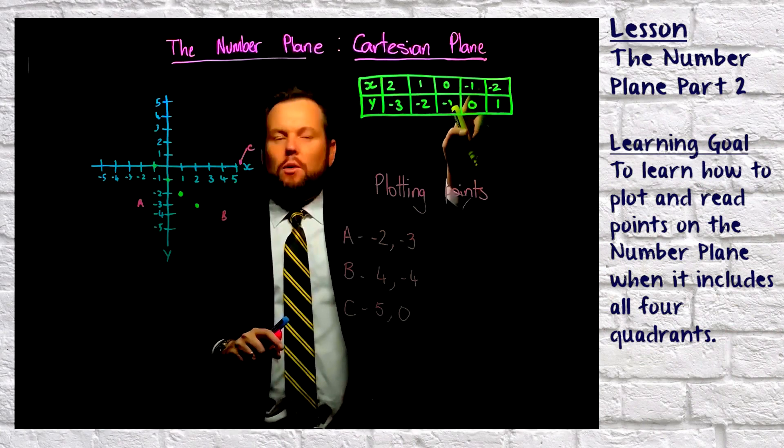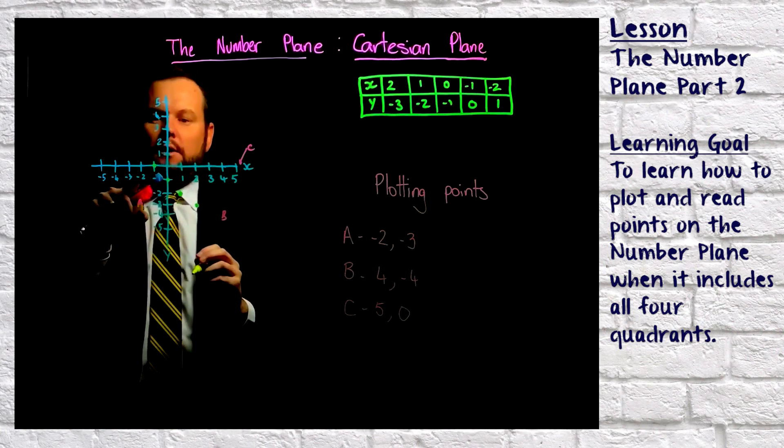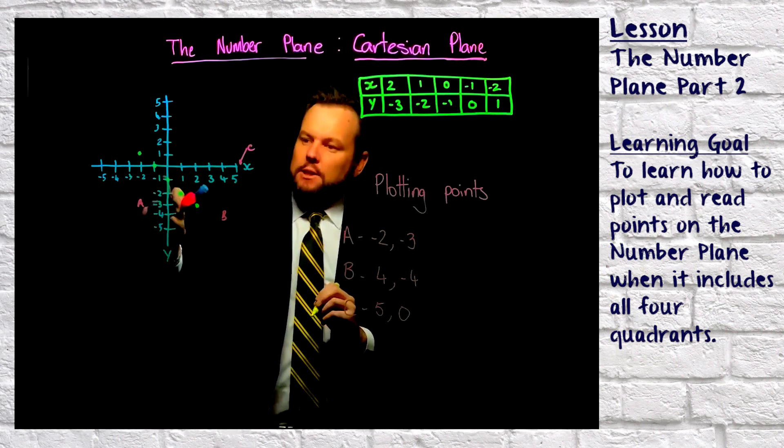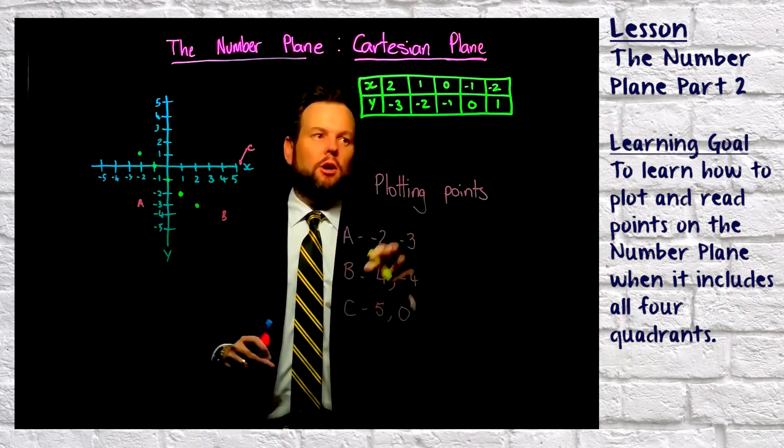We've done that one. Negative two and one. So negative two and one, here we are there. Now that gives us a nice clear indication of our table.